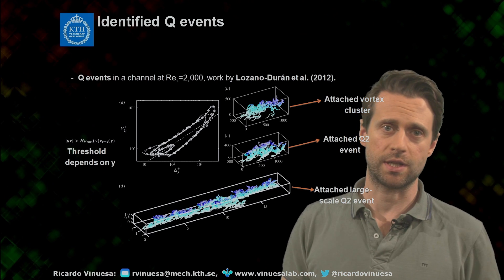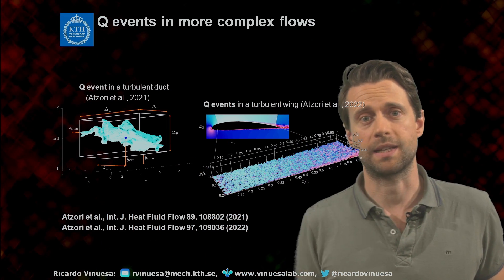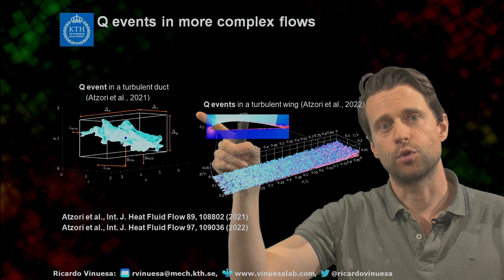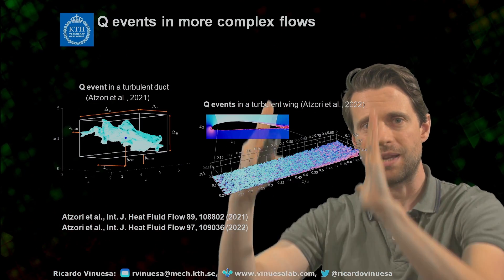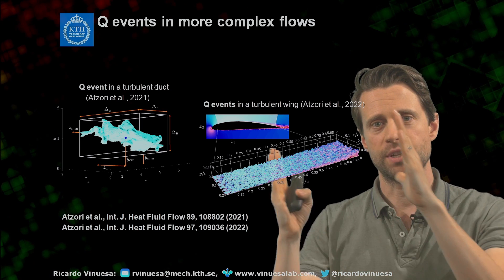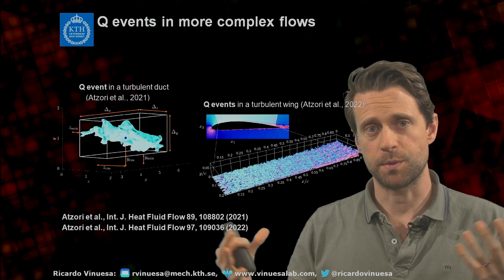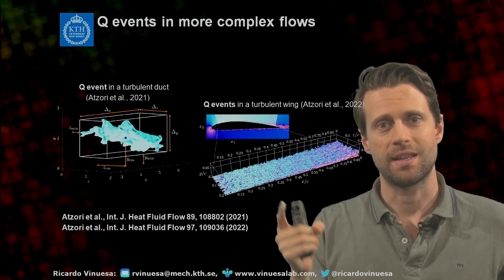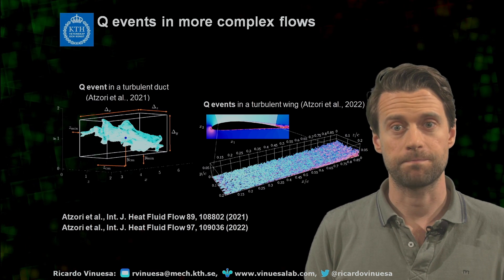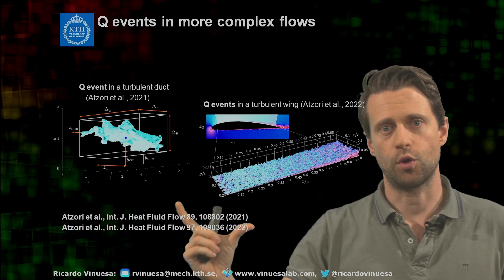There has been some recent work in the context of our group trying to extend this analysis to more complicated geometries. There is the work of Azzori and others where we identify intense Q events in turbulent ducts. Ducts are interesting because in addition to the walls, you also have vertical panels that introduce corners, and those secondary motions in the corners can have interesting properties for the structures. More recently, we have also worked with Azzori and others in the context of turbulent wings with DNS of very complex geometries. Even here, you can identify these very complex Q events with strong pressure gradients, curvature, and quite complex turbulence phenomena. References can be found in the International Journal of Heat and Fluid Flow 2021 and 2022.